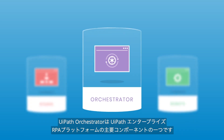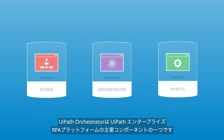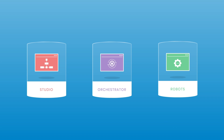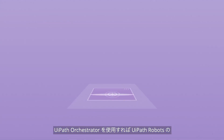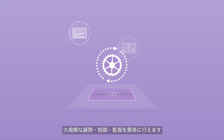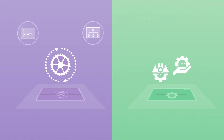Welcome to UiPath Orchestrator, a key component of the UiPath Enterprise RPA platform. With this application, you can easily deploy, control, and monitor the productivity of your UiPath robots at scale.